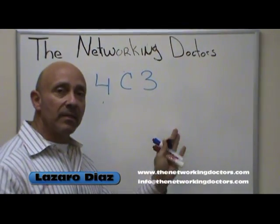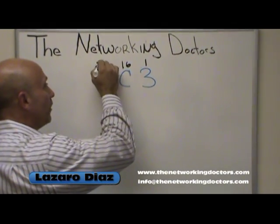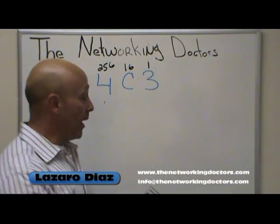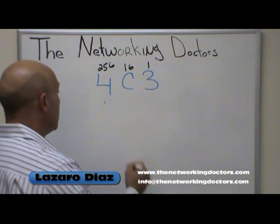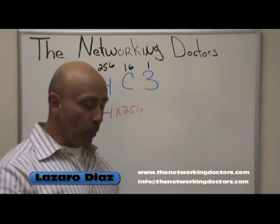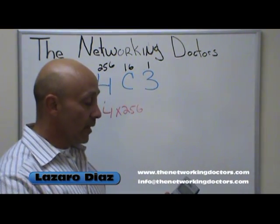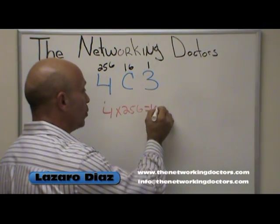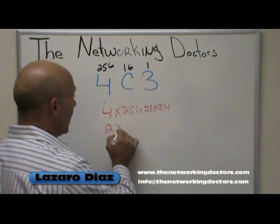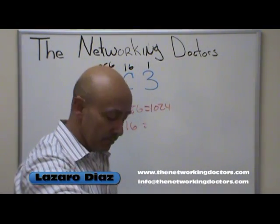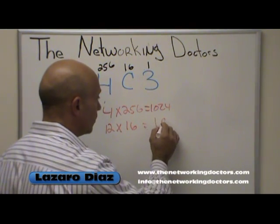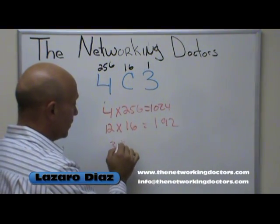We all know hex is base 16, so the place values are 1, 16, 256. The other video picked up a calculator: 4 times 256 equals 1024. But imagine doing that inside a Prometric center — they'll kick you out. Then C, which is 12, times 16 equals 192. And then 3 times 1.